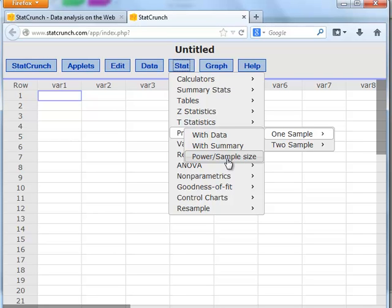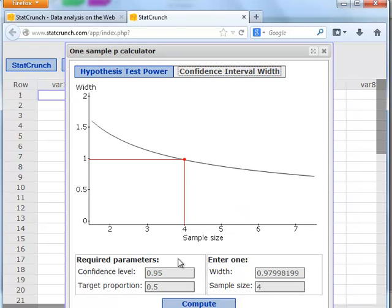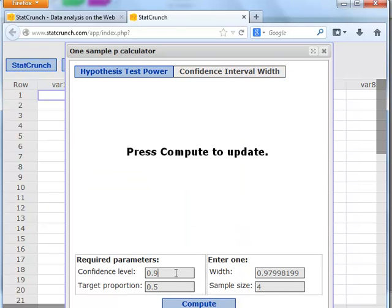This time, we want the option Power slash Sample Size, and we're going to be working with the sample size. Click on the right tab for Confidence Interval Width. Confidence Level gets entered first. That's 0.9 or 0.90. The Target Proportion, if you had an estimate of what the proportion was, you would enter that here. We have no idea, so I'm going to leave that as 0.5.